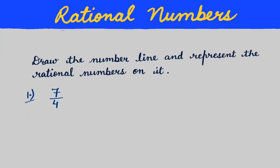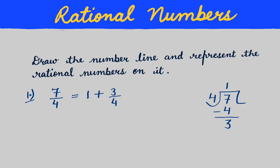Today we will represent rational numbers on the number line. The first one is 7/4. We divide: four ones are four, and we get remainder 3. So we can write 7/4 as quotient plus remainder over 4, which means 7/4 = 1 + 3/4.